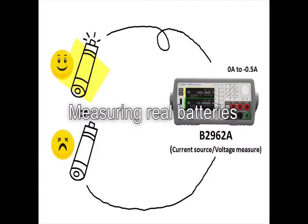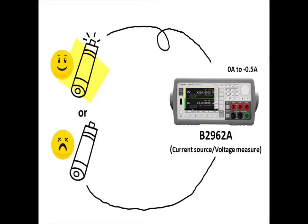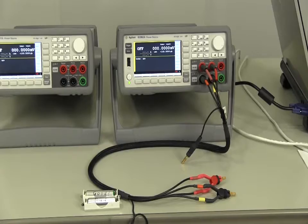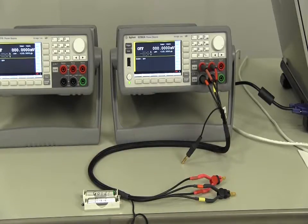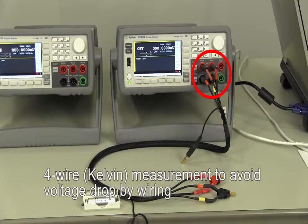Firstly, I'll measure the current-voltage characteristics of these two batteries. I'll sweep load current from 0 to 0.5 Amperes and measure the voltage. Now I connect the battery to the measuring instrument. In order to cancel voltage drop caused by wiring resistance, I will employ the 4-wire method.